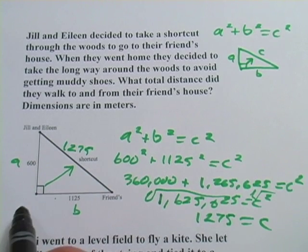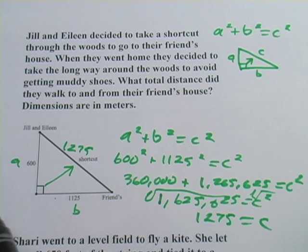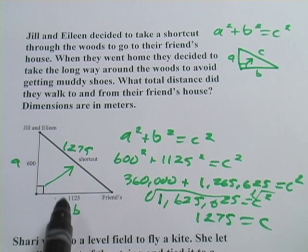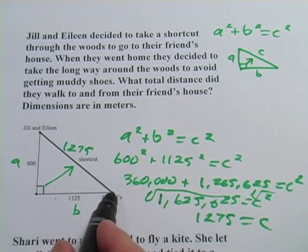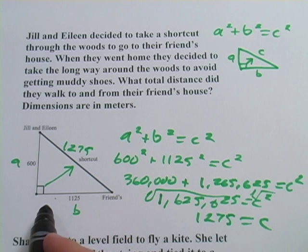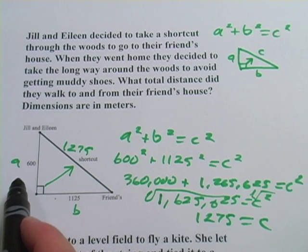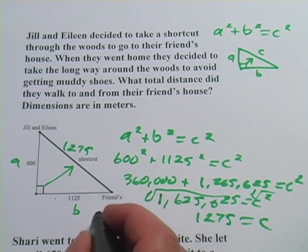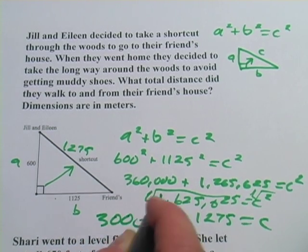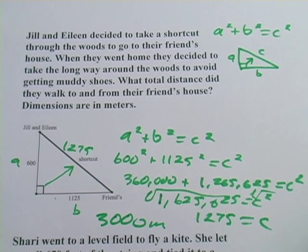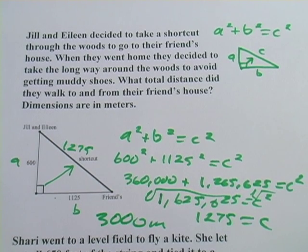Now, the original problem said how far did they walk in going to and from. On the way there, they went 1,275. On the way back, they added in this 1,125 and this 600. So we add all those together, and we get 3,000 meters. So that's an application of the Pythagorean theorem.